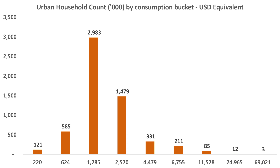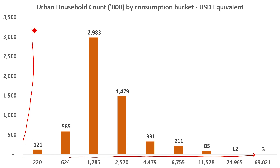As a founder focused on urban markets, my primary interest is in urban households. The chart in front of you presents a distribution of urban households by their annual consumption. The base represents the distribution of consumption in US dollar equivalent terms. The axis on the left represents the count of households in thousands. The biggest segment comprises about 3 million households that consume between $624 and $2,570 per year.